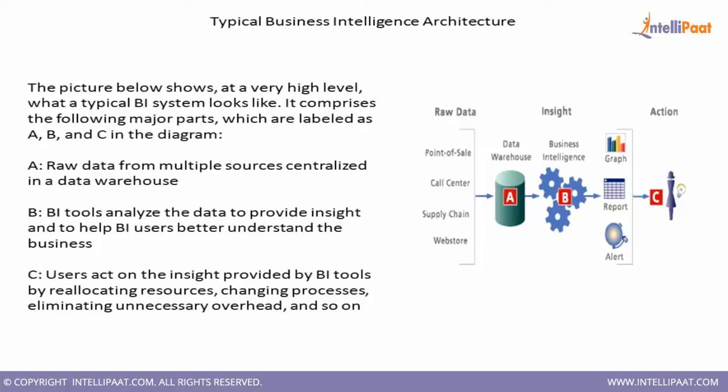Once all data is in the warehouse, we connect to it from our BI tool, analyze the data, and come up with insights. The second layer is the business intelligence layer — the tool, analytics, and analysis applied on top of the data to create insights. The output is graphs and reports provided to the user, who then takes appropriate actions such as reallocating resources, changing processes, or eliminating unnecessary overhead based on those insights.